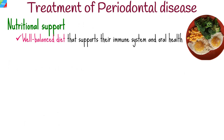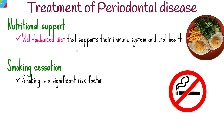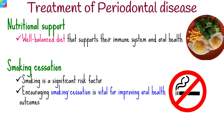Proper nutrition plays a significant role in maintaining oral health. People with HIV should be encouraged to maintain a well-balanced diet that supports their immune system and oral health. Smoking is a significant risk factor for periodontal disease and can have a more detrimental impact on individuals with AIDS, so encouraging smoking cessation is vital for improving oral health outcomes.